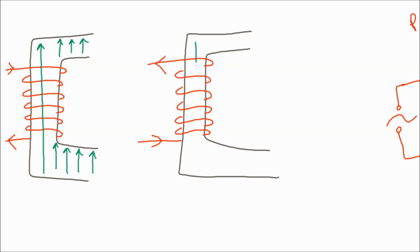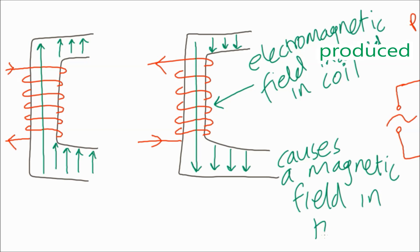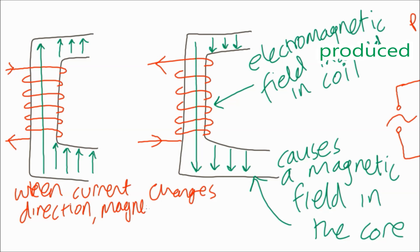Where it was going up on the left, it's now going down on the right. So we had current coming into the coil, producing an electromagnetic field in the coil, and because the iron core is a magnetic material, that magnetic field passes into the iron core. Just to reiterate, changing direction of the current changes the direction of the magnetic field in the core.